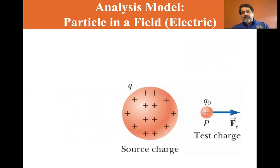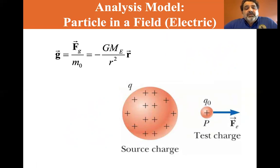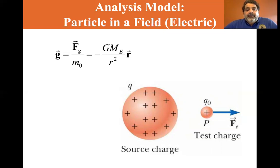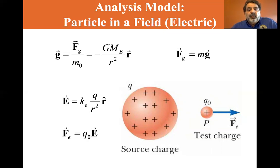Here's the source charge — a particle with a lot of positive charges on it. You put a positive test charge near it, and the electric force is directed away from the ball. Just as with gravity, g equals the gravitational force divided by m₀ — about 9.8 m/s² pointed toward the center of the earth — so F = mg. By the same token, E = k_e · q / r² in the direction of r̂, and the force equals q₀ · E.